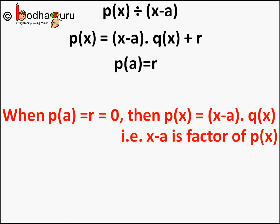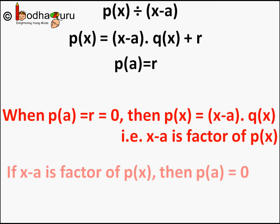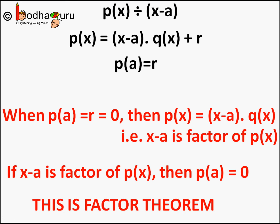Vice versa, we can also say: if (x − a) is a factor of p(x), then p(a), which is the remainder, has to be equal to 0. This is the Factor Theorem. So the Remainder Theorem led us to the Factor Theorem.